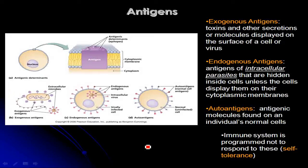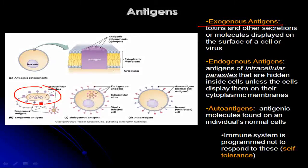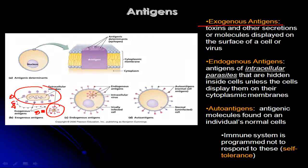Not all antigens are necessarily on the surface of some foreign cell or virus, but those that are, are called exogenous antigens. These are antigens located on the surface of a bacterium, or viral antigens located on the surface of a virus. If a bacterial cell secretes proteins or toxins, those things released by the microbe can also be considered exogenous antigens. Exogenous simply means those antigens are located outside — exogenous of your cells.